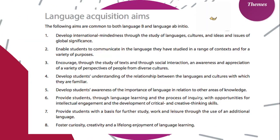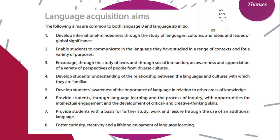The aims of this course: first, developing an international mindset through the study of languages, cultures, and ideas and issues of global significance. Second, this course aims to enable students to communicate in the language in a range of contexts and for a variety of purposes. Third, we aim to encourage you to engage in the study of texts and social interaction. Fourth, we want to create an awareness and appreciation of a variety of perspectives from people from diverse cultures. Fifth, the course aims to develop your understanding of the relationship between language and cultures — this is my favorite because we get to talk about identity as a social construction and how language defines and shapes how we express ourselves.